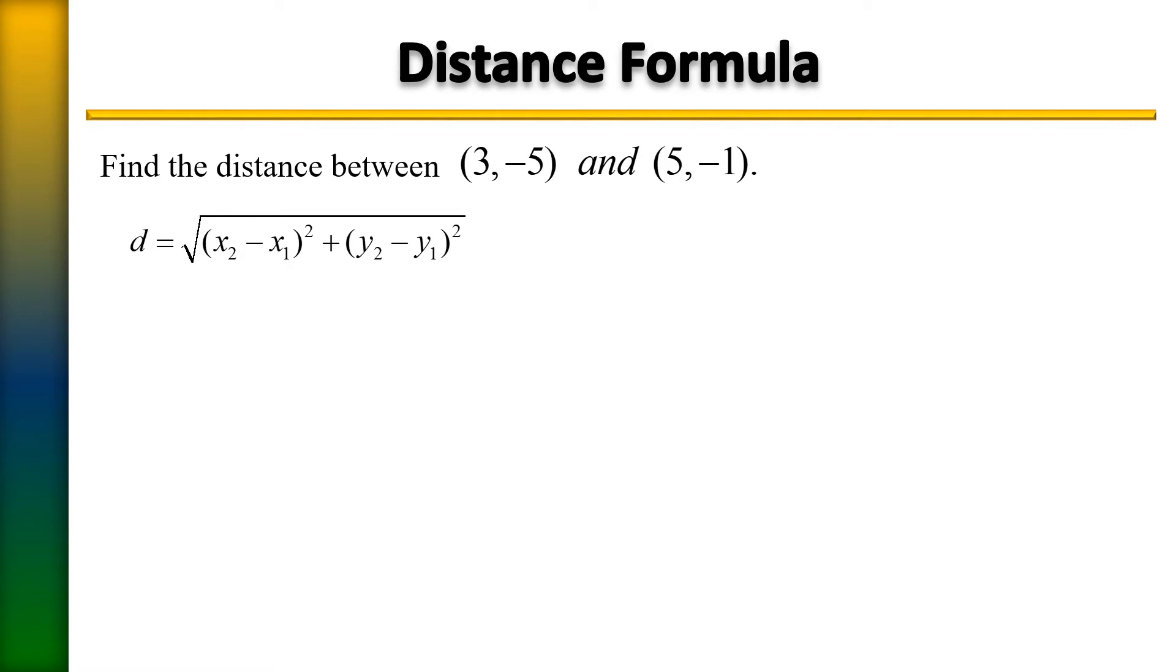So let's plug in these points. When we plug them in, they're going to look like so. Remember, double negatives become positives. Negative 5, but with a negative in front of it, becomes plus 5.